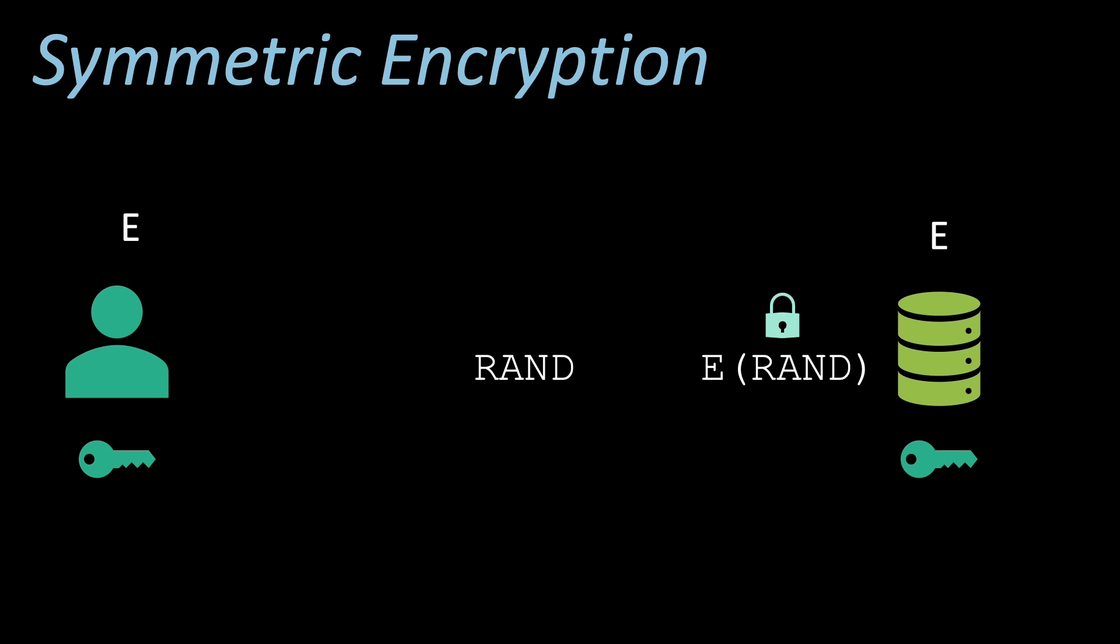The server also encrypts RAND with his symmetric key, and if both values are equal, the user is successfully authenticated. Note that the user's password is not transmitted, which helps during eavesdropping attacks, since at every authentication attempt, a new random number is generated. An attacker who gets a hold of a previously transmitted ciphertext cannot use this for a replay attack to masquerade as the legitimate user.